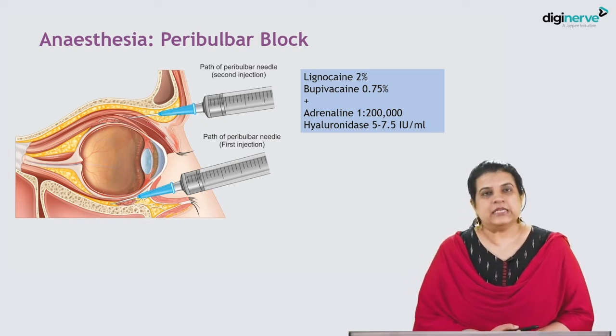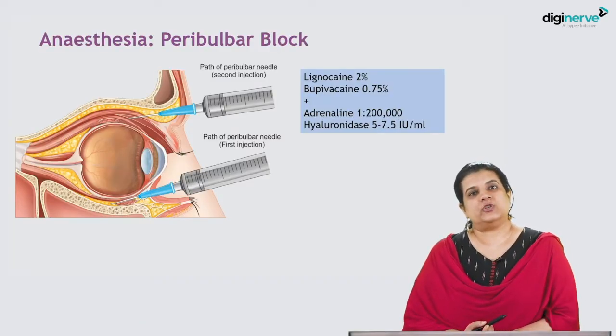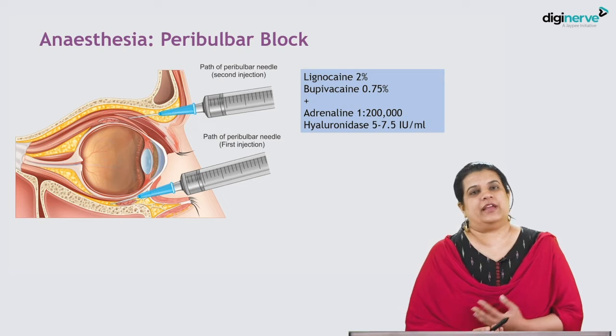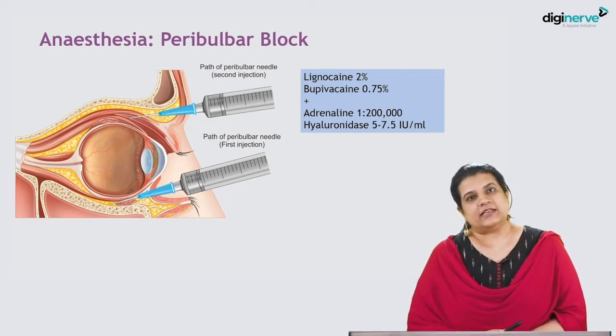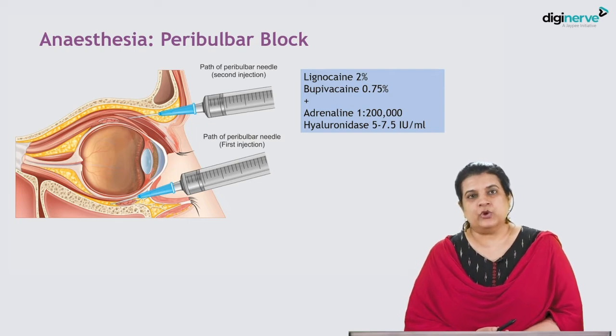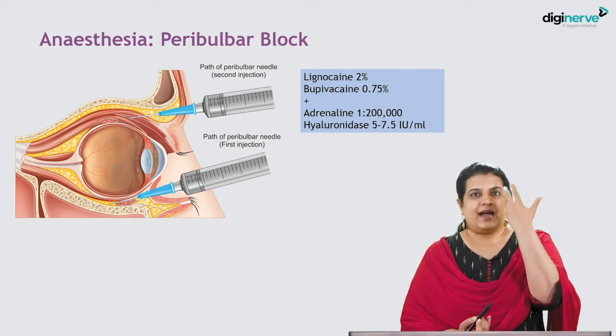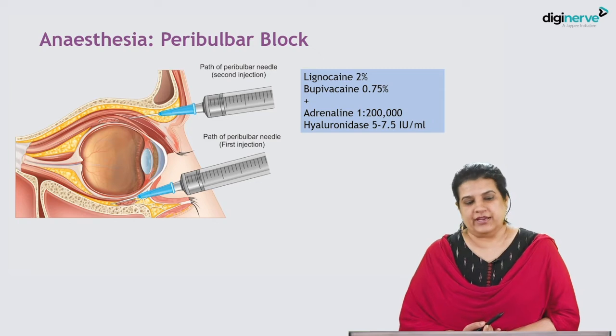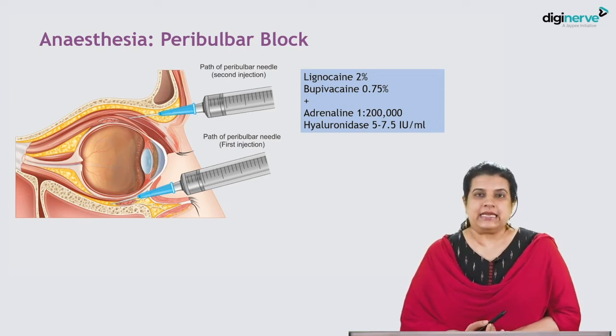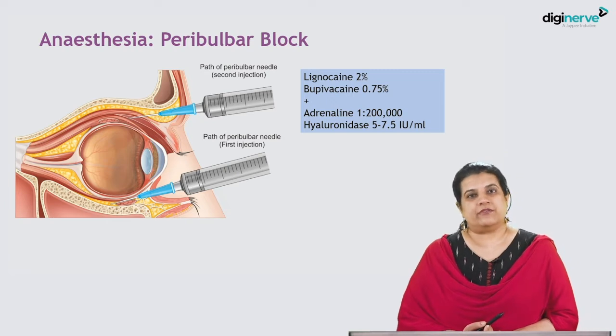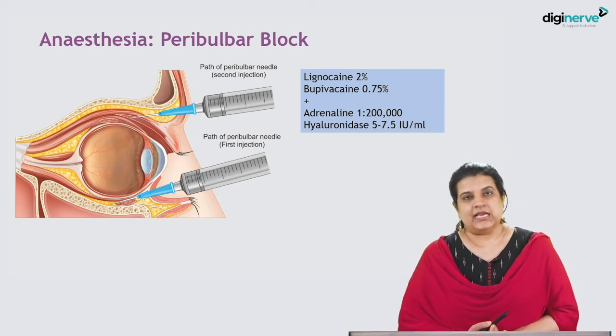The peribulbar block injection contains a short-acting anesthetic agent — lignocaine 2% — and a long-acting anesthetic agent that should last at least till the end of the surgery and a little beyond — bupivacaine 0.75%. Hyaluronidase is added at 5 to 7.5 international units per milliliter to help the mixture spread and bring about the desired effect. Adrenaline is also added at 1:200,000 for vasoconstriction.